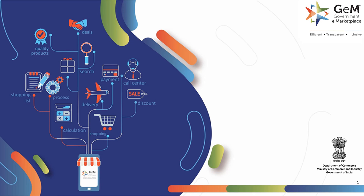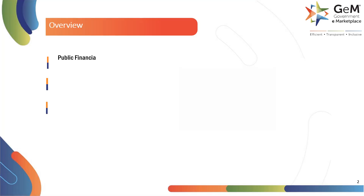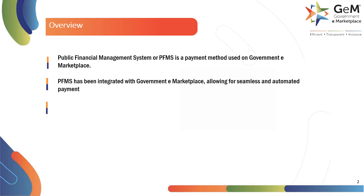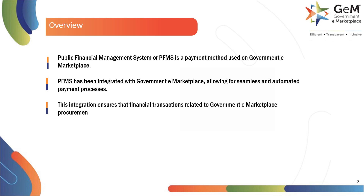Namaskar. Welcome to Government eMarketplace. In this module, we will be learning about the payment process for PFMS payment method. Public Financial Management System or PFMS is a payment method used on Government eMarketplace. PFMS has been integrated with Government eMarketplace, allowing for seamless and automated payment processes. This integration ensures that financial transactions related to Government eMarketplace procurement are closely monitored and managed.